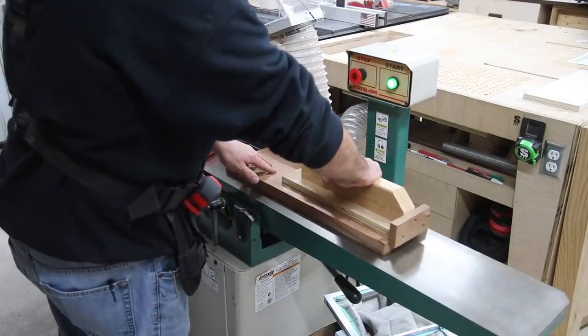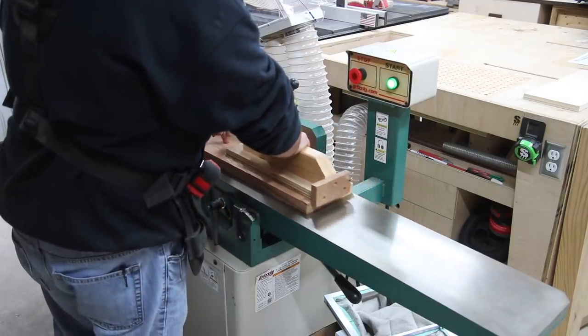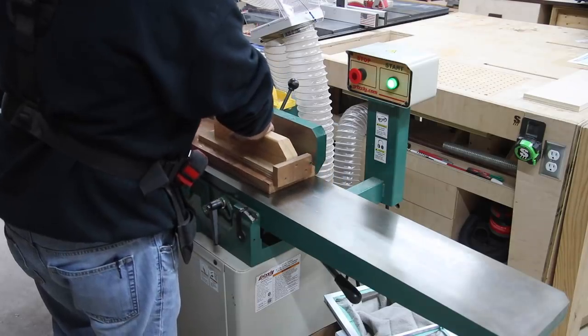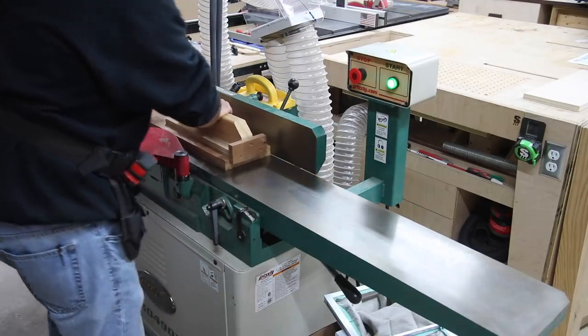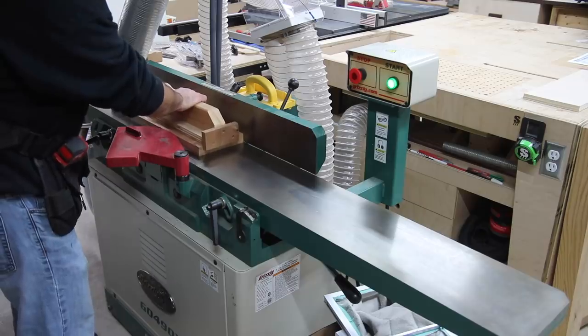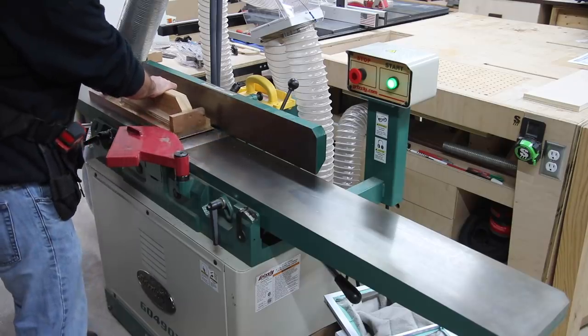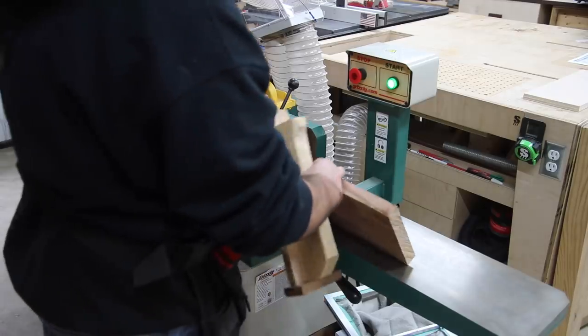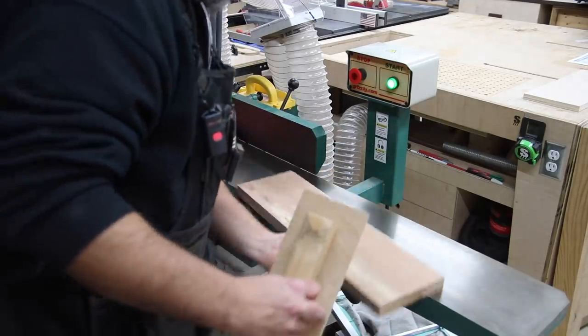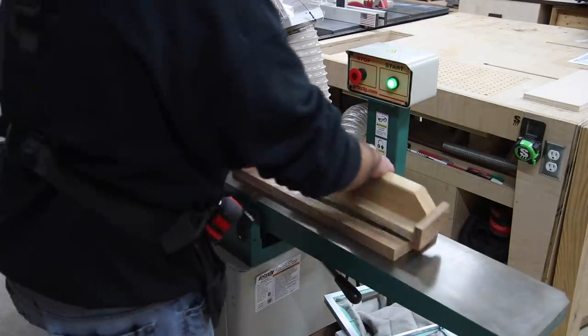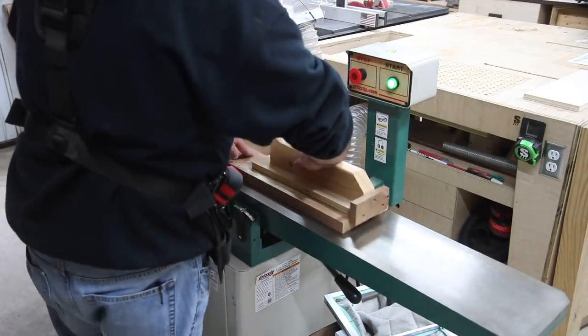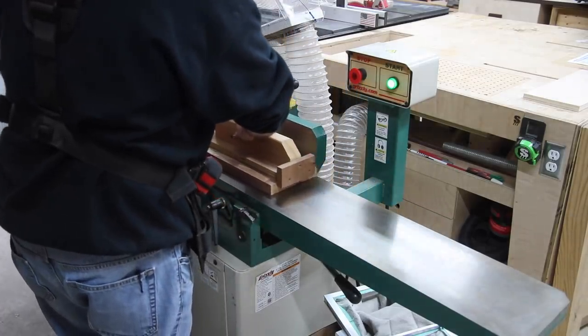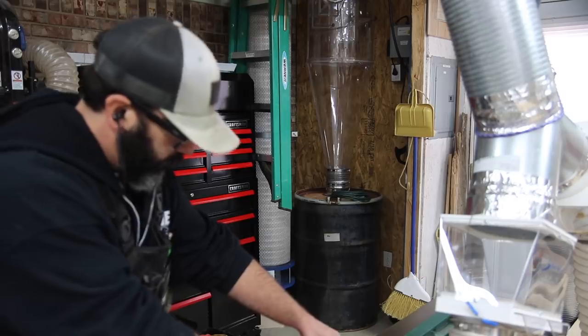Now I've got the dust collector on now, and you'll be able to see the difference. This has a six inch sweeping 90 coming out of the base of this jointer, and it's going up not very far to the cyclone. So it has no problem whatsoever collecting the dust. And here in the next shot you'll be able to see, as I'm cutting, the dust being collected in the cyclone.